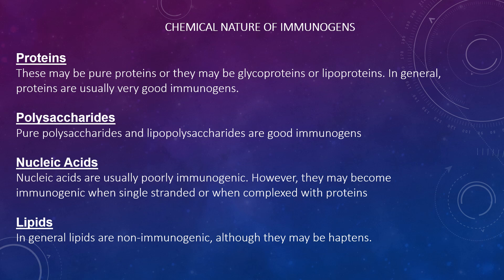Pure polysaccharides and lipopolysaccharides are good immunogens. Nucleic acids are usually poorly immunogenic; however, they become immunogenic when single-stranded or when complexed with proteins. In general, lipids are non-immunogenic, although they can be haptens.